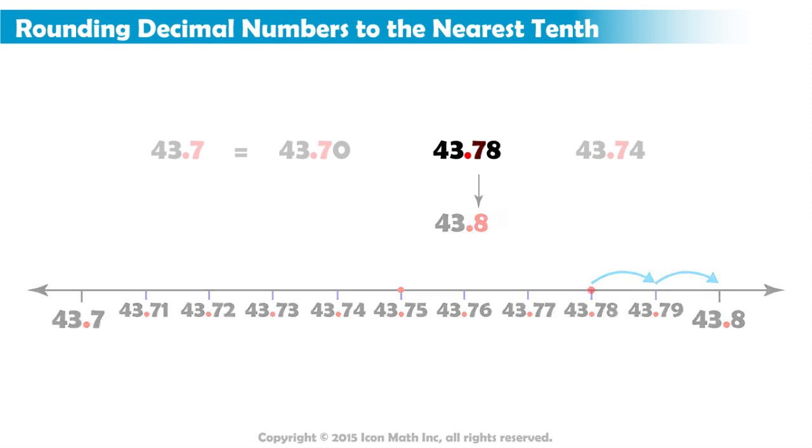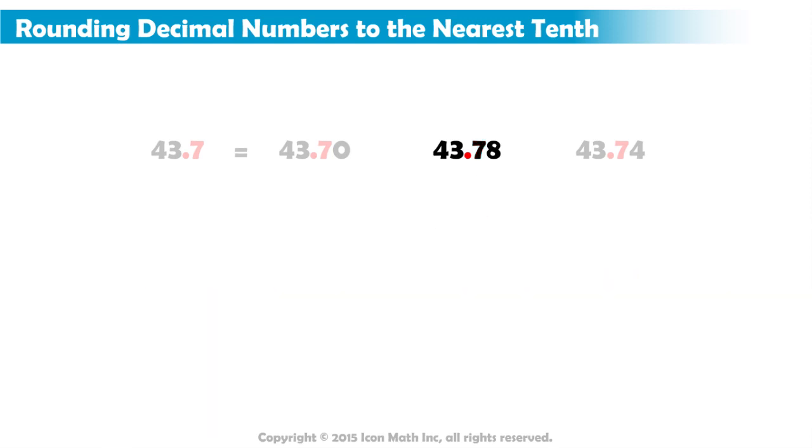So, just like when rounding whole numbers, we can round to the nearest tenth. We look at the digit in the tenths place, then compare it to the digit on its immediate right. If the digit on the right is equal to or greater than 5, we round up the digit in the tenths place to the next digit. And all digits on the right of the tenths place become zeros.